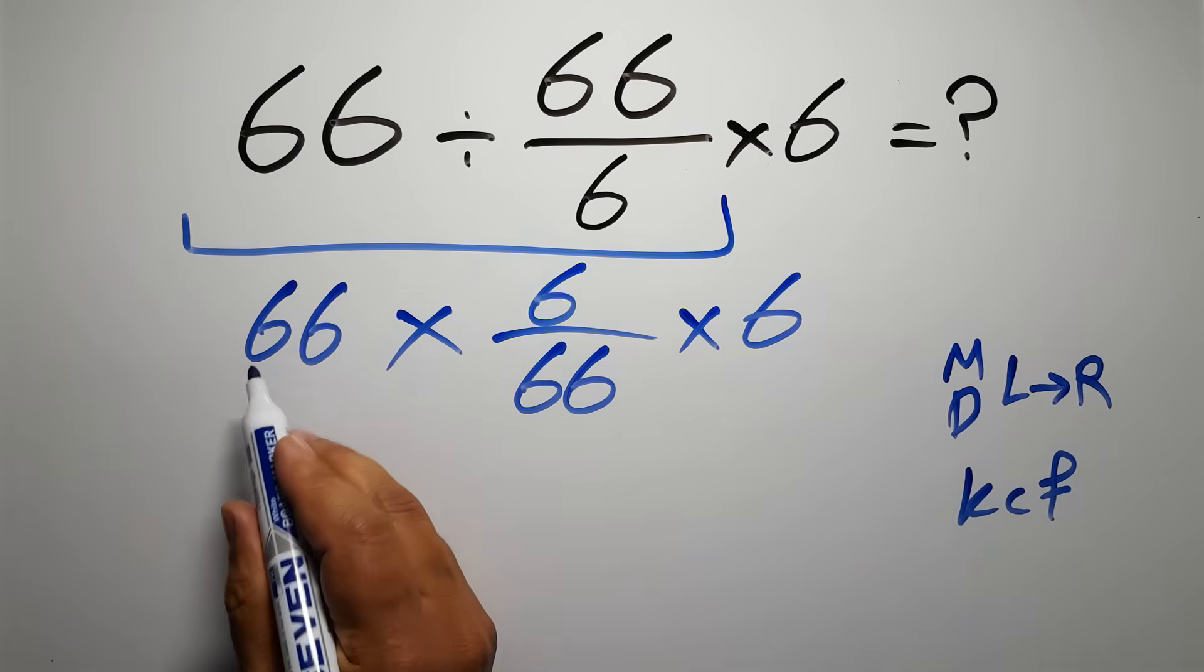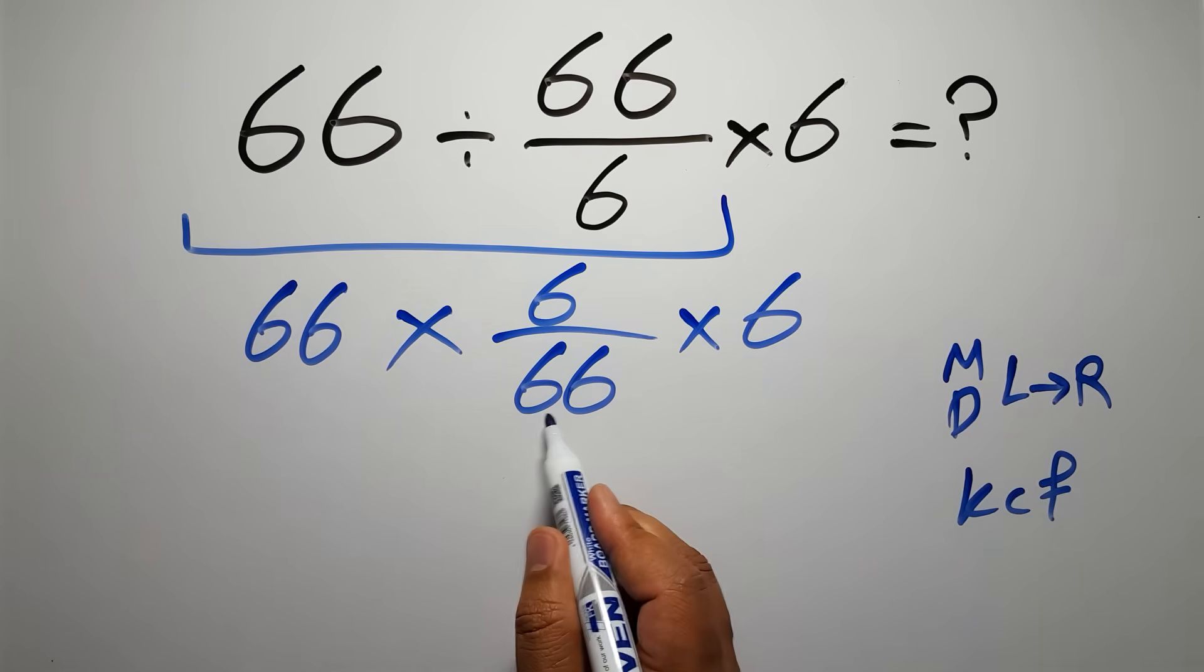Now this multiplication: 66 times 6 over 66.